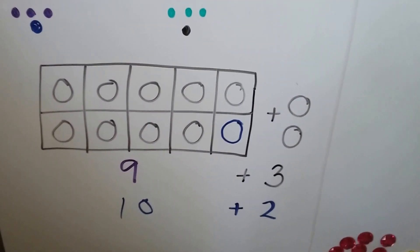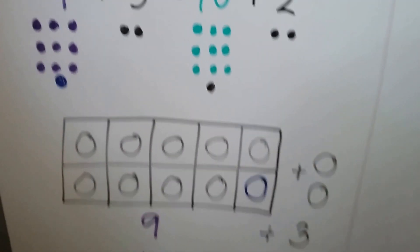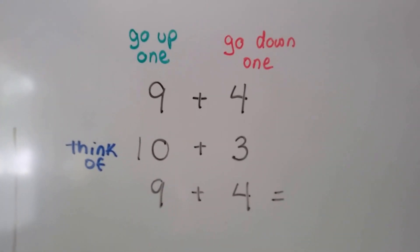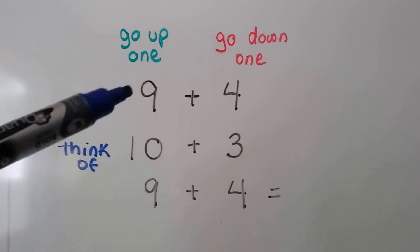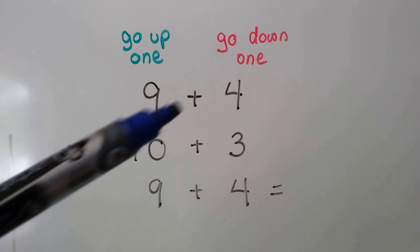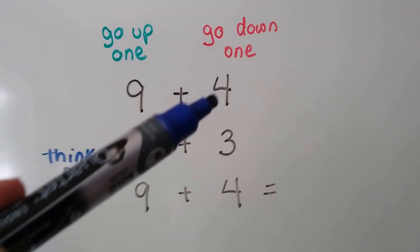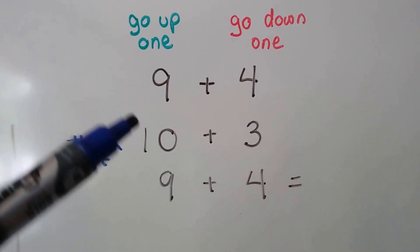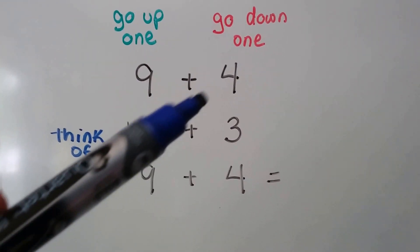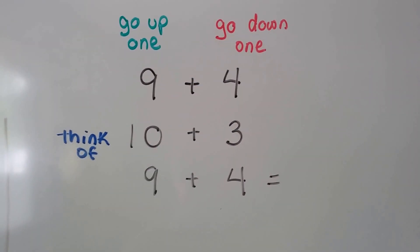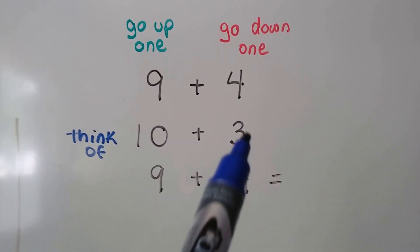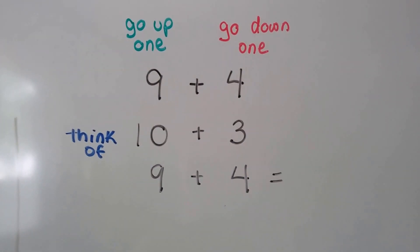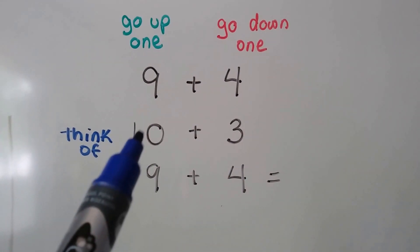Let's try that. We have 9 plus 4. We make the 9 go up 1, we make the 4 go down 1 — the 9 becomes a 10, the 4 becomes a 3. We gave 1 to the 9, so now it's a 3 and that's a 10. Now we can add 10 plus 3, which is 13.